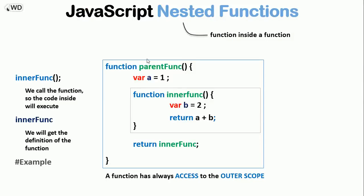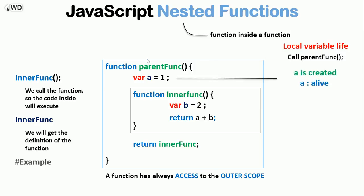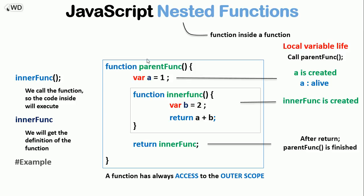Now let's talk about the local variable life. When we call the parent function, the variable a is created — a is alive. Then the inner function is declared but its code is not executed. After the return, the parent function is finished. Remember, when a function is finished, its local variables are deleted — so here the a variable is deleted; a is dead.